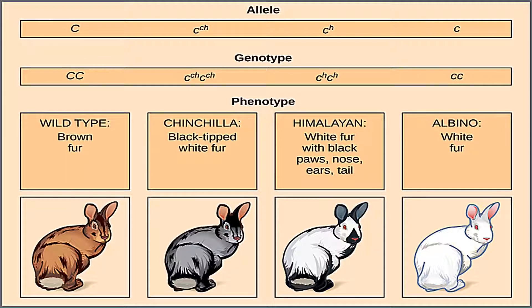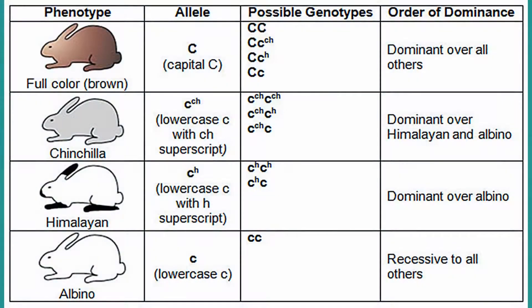The four different fur colors represent four different alleles in rabbit fur color. As you can see in the genotype, all genotypes given are homozygous for that specific allele. The agouti color has allele capital C since agouti is the most dominant allele, followed by chinchilla with lowercase c with superscript ch. Next is himalayan with lowercase c with superscript h. And the most recessive allele is lowercase c for albino rabbits.